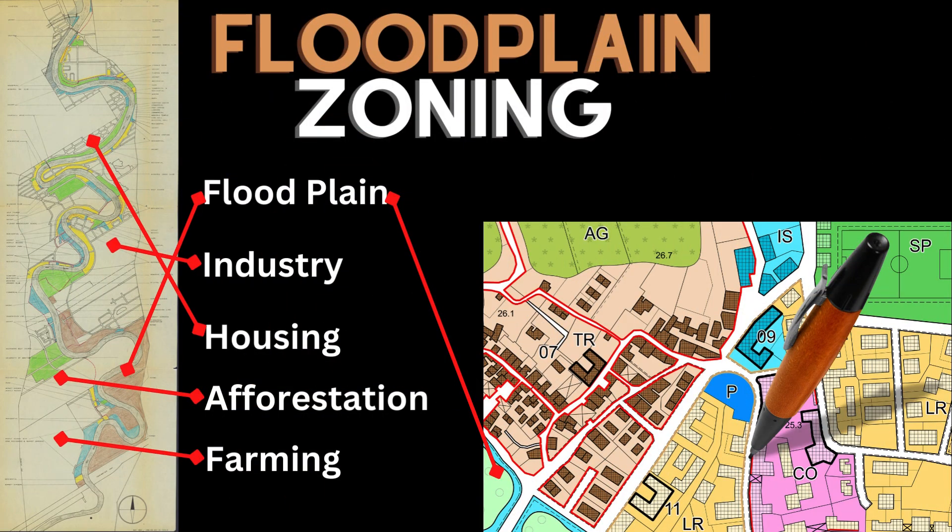Floodplain zoning involves restricting or regulating development in flood prone areas. By avoiding construction in these areas, the risk of damage from flooding can be reduced and natural floodplains can be preserved to absorb excess water.